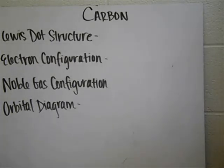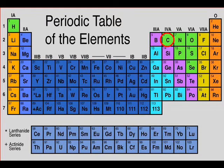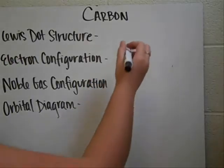First we're going to learn about how to do a Lewis dot structure. And how you do that is you look on your periodic table and see what the symbol is for your element, and so for carbon it's C.